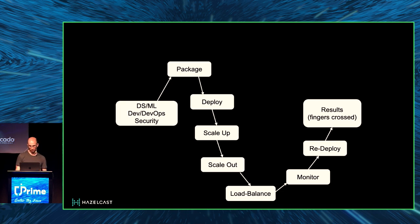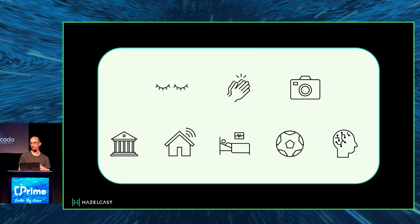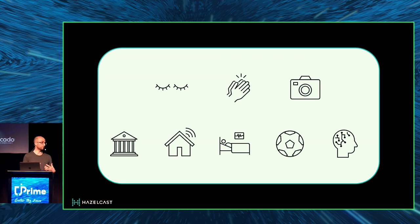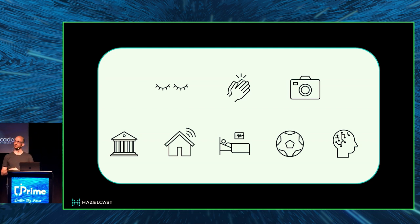Real time means different things for different architectures. For some architectures, it might mean yesterday's events or a few hours; for some applications, maybe a few weeks or months — you look at your database and do analytics. For this talk specifically, what we mean by real time is sub-millisecond events.